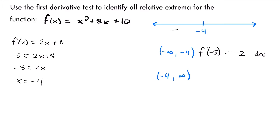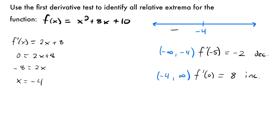Now let's test the other interval from negative 4 to infinity. I'm going to pick 0. So f prime of 0 will be equal to 2 times 0 plus 8, which is 0 plus 8, so the value of our derivative is 8 — which is positive. Our slope is positive here, meaning it is an increasing function on that interval.